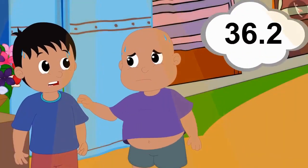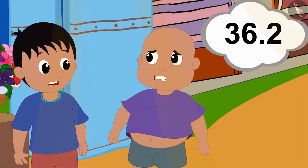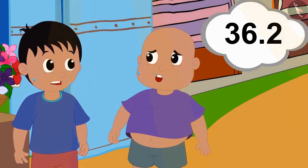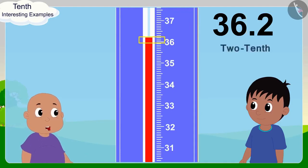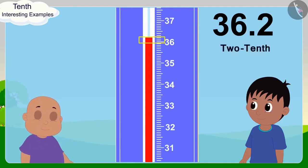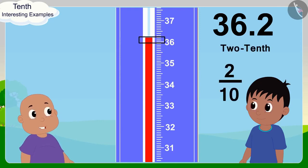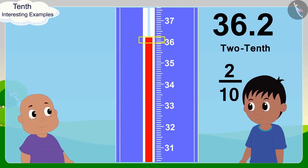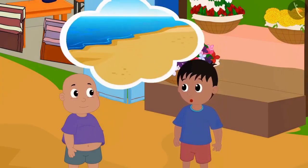Babalu excitedly applies his learning: If tomorrow's temperature is 36.2 degrees Celsius, then we can say that 0.2 degrees Celsius is 2 tenths of a degree Celsius, or 2 by 10 of a degree Celsius. Raju agrees and suggests they go for a walk on the seashore to get some relief from the terrible heat.